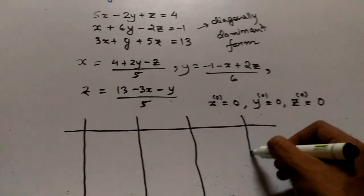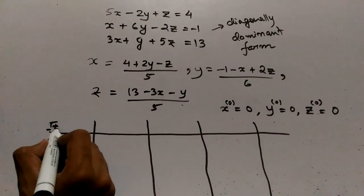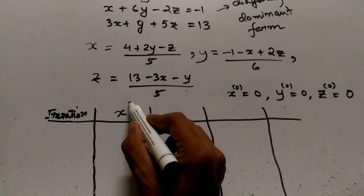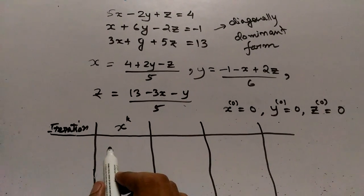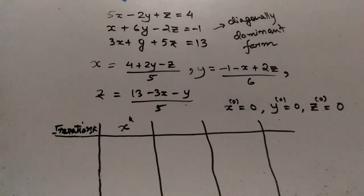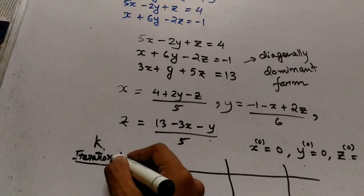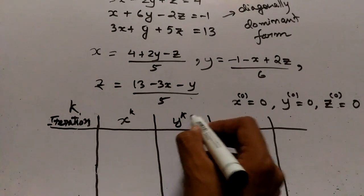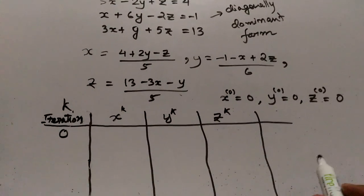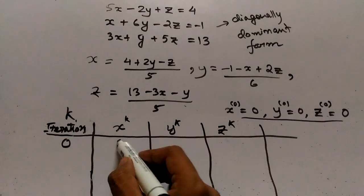The first column of the iteration table counts the number of iterations k. The second column is x(k), followed by y(k) and z(k). The initial iteration (k=0) uses the initial assumption where x, y, and z are all 0.